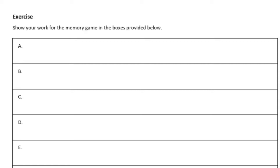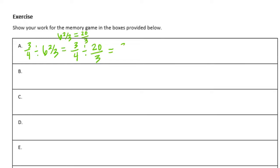Exercise: show your work from the memory game in the boxes provided below. There was a memory game — I'm just going to go through all the questions. They're probably not going to be in the same order that you had them, but if you want to check your answers, I'll go through all the different memory cards. So three-fourths divided by six and two-thirds: six and two-thirds equals six times three is eighteen plus two is twenty-thirds. If we invert and multiply, we have three-fourths times three-twentieths, so we get nine eightieths.